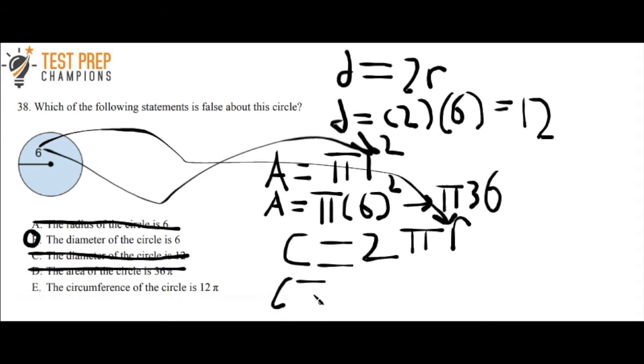So we'll do 2 times—sorry, 2 times 6. We leave our π here, and 2 times 6 equals 12. Therefore, our circumference equals 12π. So that one's also correct.